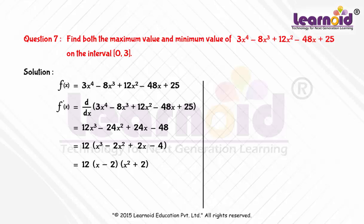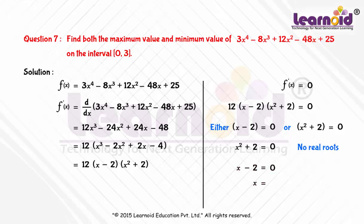For maxima or minima, f'(x) equals 0. So 12(x - 2)(x^2 + 2) equals 0. Either x - 2 equals 0 or x^2 + 2 equals 0. x^2 + 2 equals 0 will not give any real roots. So we will consider x - 2 equals 0 or x equals 2.